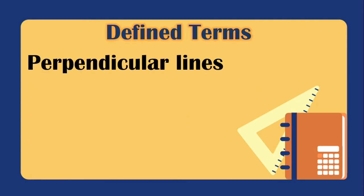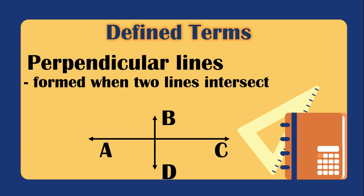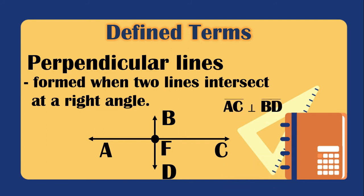Perpendicular lines are formed when two lines intersect at a right angle, creating four right angles. So AC is perpendicular to BD — that symbol denotes perpendicularity.